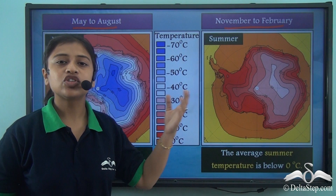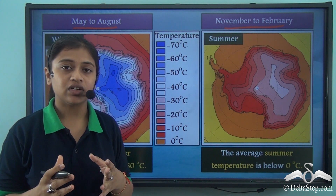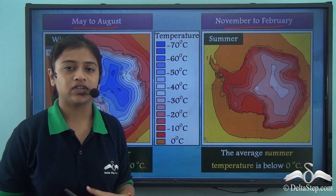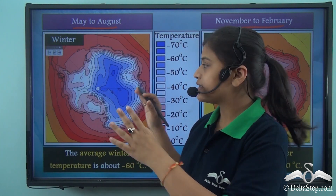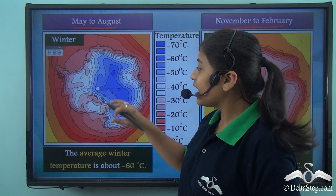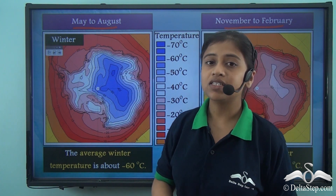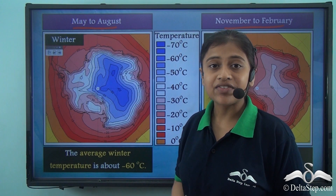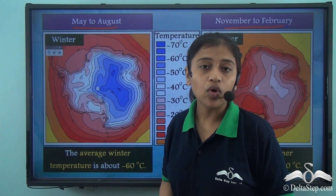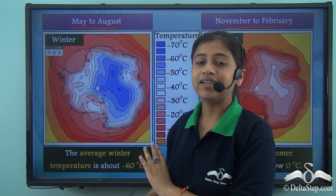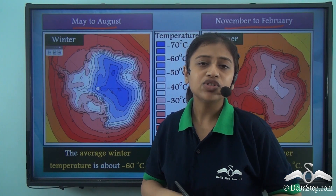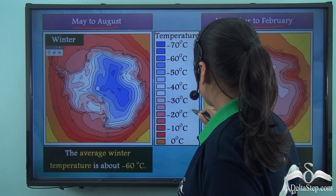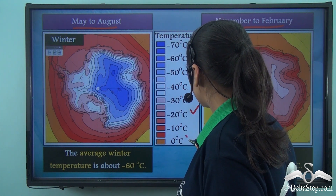Here are two images that represent the temperature during winter and summer season respectively. During winter season, the innermost part of the continent mostly experiences the lowest temperatures around minus seventy degrees Celsius or even lower, while the coastlines experience temperatures that are usually higher, mostly around minus twenty degrees Celsius to zero degrees Celsius.